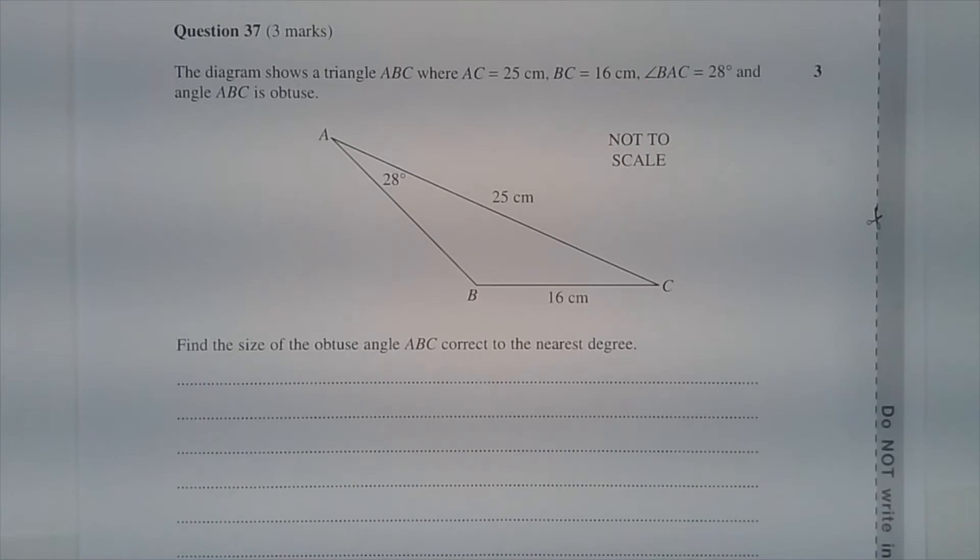Question 37. The diagram shows a triangle ABC where AC equals 25 cm, BC equals 16 cm, angle BAC equals 28 degrees, and angle ABC is obtuse. Find the size of the obtuse angle ABC correct to the nearest degree.